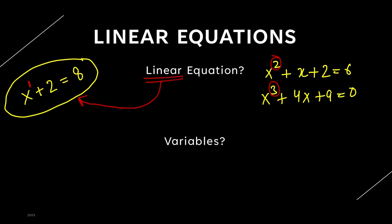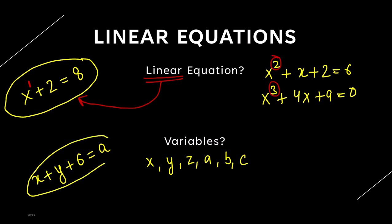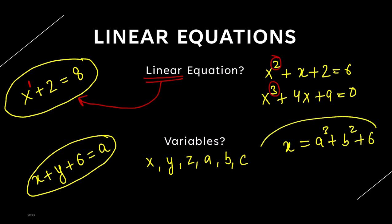Now, what exactly is a variable? For simplicity, in an equation, whatever x, y, z, a, b, c you find — those are all variables. And if it is a linear equation, the maximum power of these variables can be 1 and not more than that. Suppose if I ask you: x plus y plus 6 is equal to a — is this a linear equation? Yes, because the maximum power of any variable is 1. But if someone asks you: x is equal to a cubed plus b squared plus 6 — is it a linear equation? No, because the maximum power of a variable is not 1 but 3.